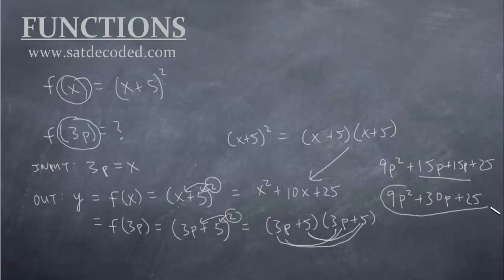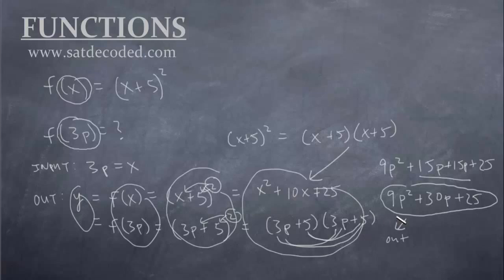That is our actual output value. So, that answers our question. F of 3p is equal to this entire expression. Just write it out like this. If you can remember what the four outputs are, y is the first one, the function is the second one, the machine is the third one, and the actual output value is the last one. Write it out like this. Be very careful with your algebraic calculations, and you get your answer. Good luck. I'll see you in the next video.